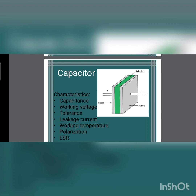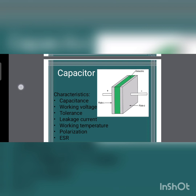In leakage current, a capacitor contains a non-conductive material known as dielectric. The dielectric allows a small amount of electricity to pass through it, called leakage. Working temperature also affects the capacitor's ability to store electrical energy. Incorrect polarization can lead to severe damage within the capacitor and throughout the circuit and device.